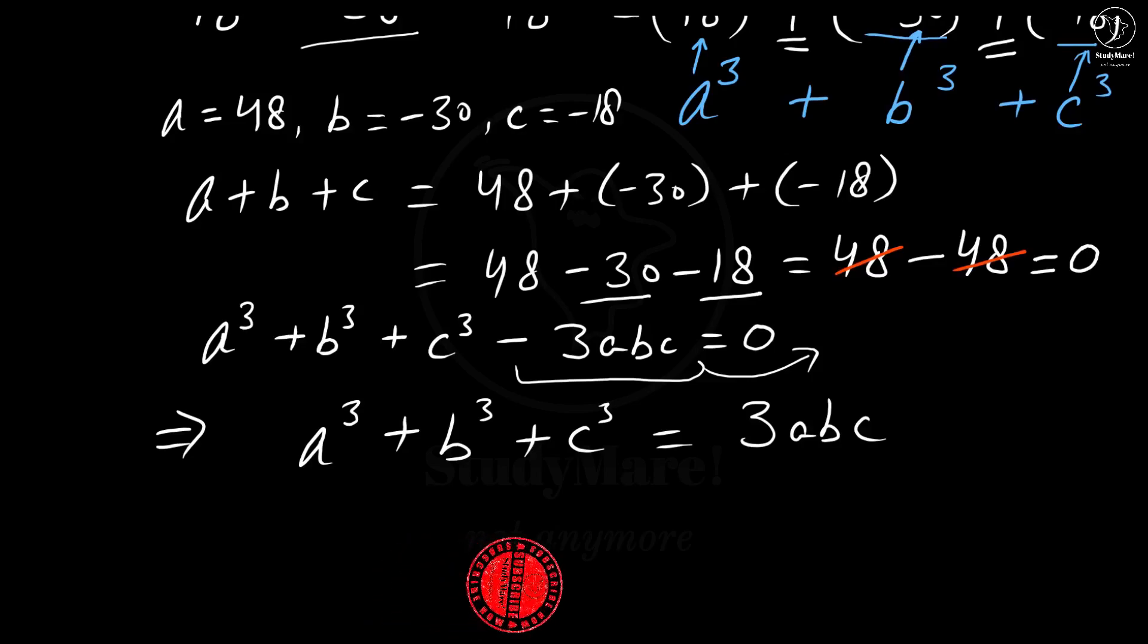In fact, in the question that I was talking about, I have also explained that this can be used as an identity. If you know that a + b + c is equal to 0, then rather than doing all these calculations, you can simply straight away use this formula.